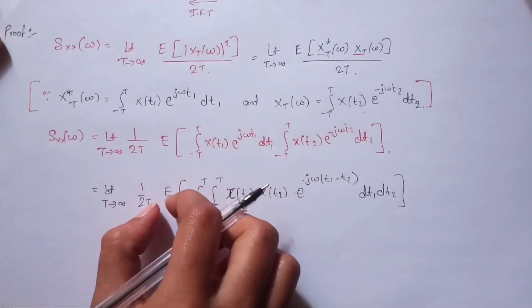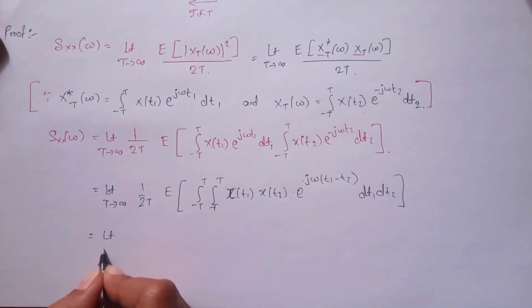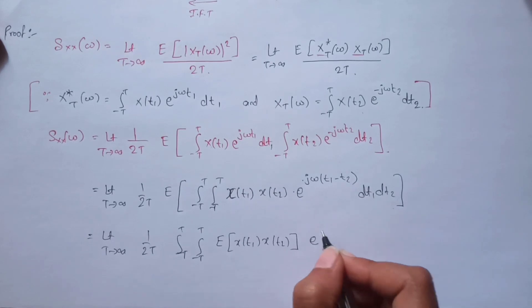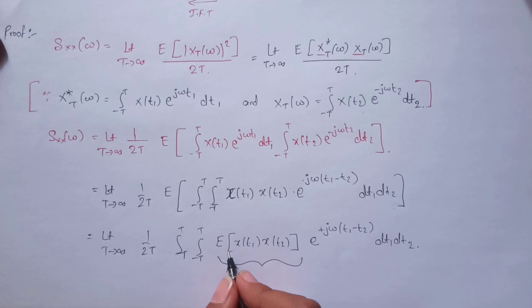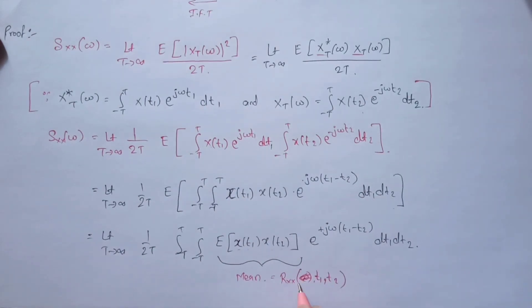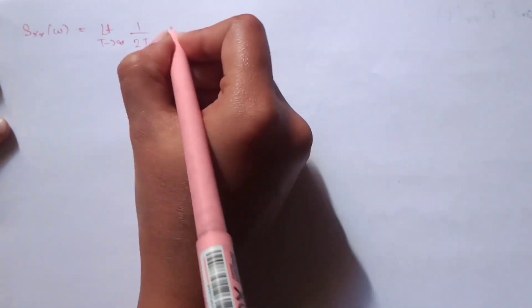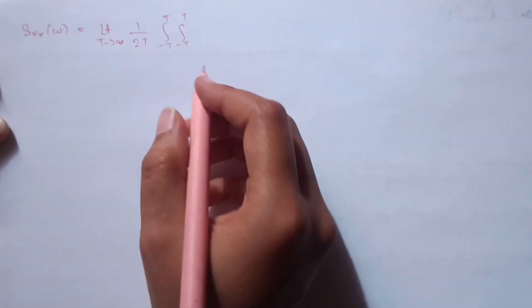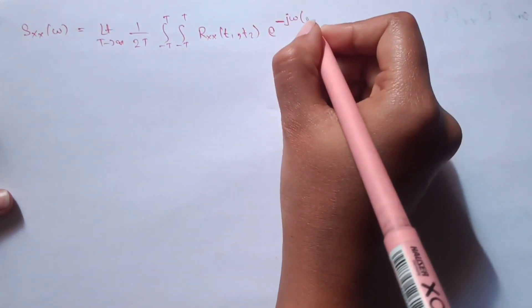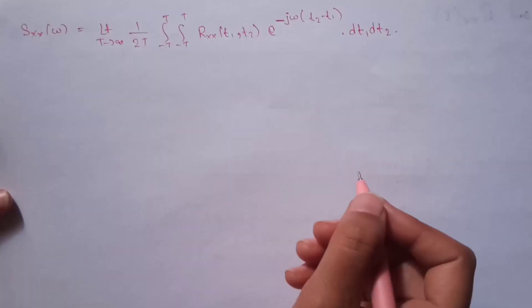Now we will substitute the expectation applied to the two variables. We take the integration outside and apply the expectation to the two variables. The expectation of x(t1) · x(t2) — one variable with respect to two different times — is the autocorrelation. So we replace that term with autocorrelation with respect to t1 and t2. We can write PSD equals the limit T→∞ of the double integration, where the expectation of x(t1)·x(t2) is replaced by the autocorrelation Rxx(t1,t2), times the exponential e^(jω(t2-t1)) dt1 dt2.